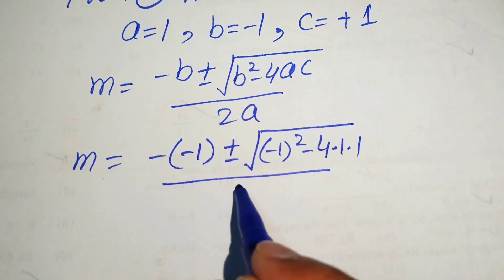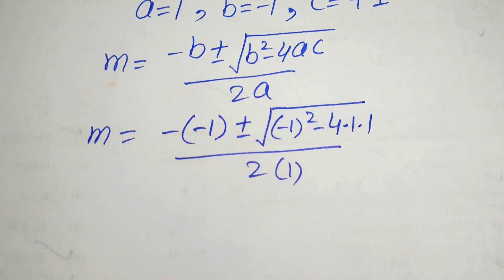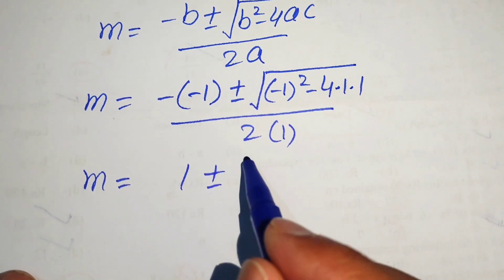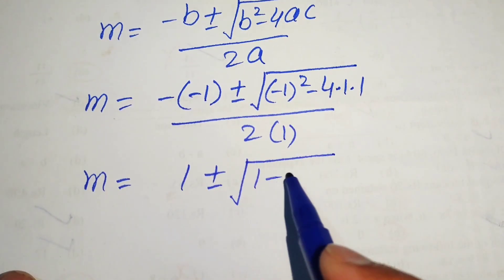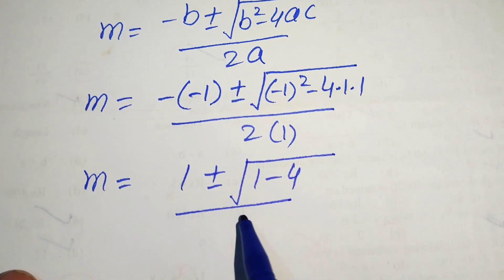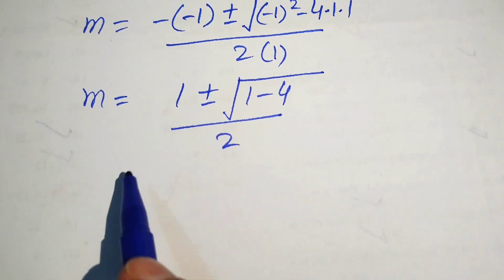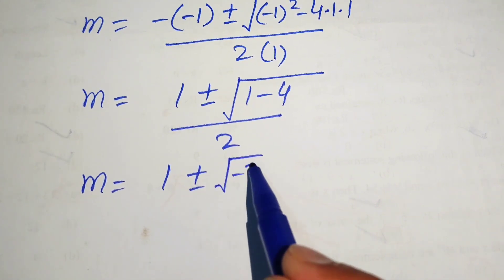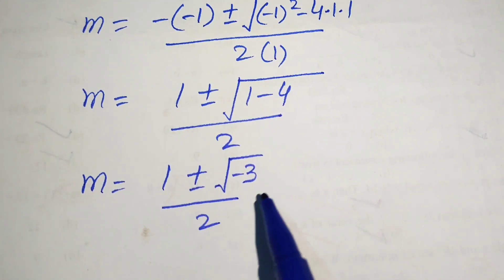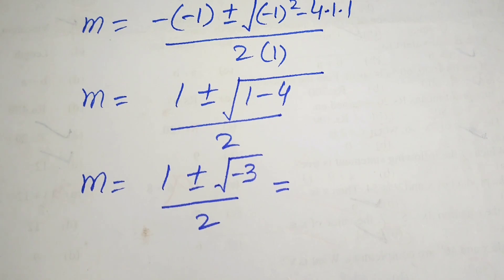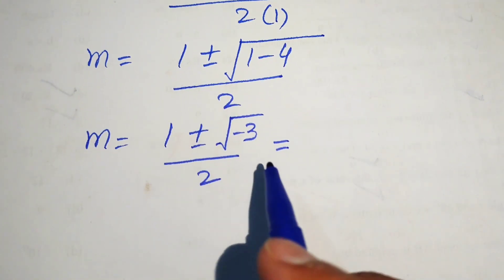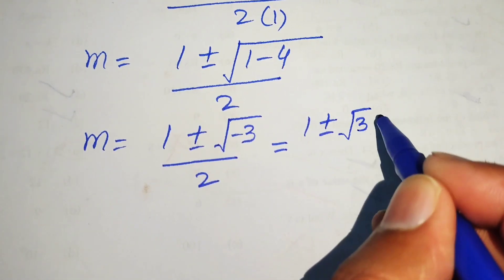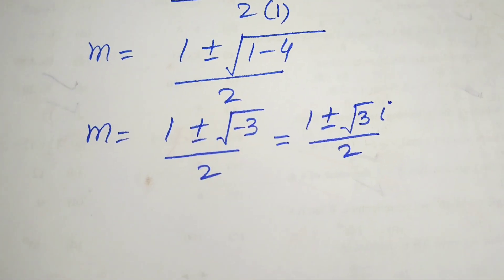Substituting the values, with a equals 1, b equals minus 1, c equals 1, we get m equals 1 plus or minus square root of 1 minus 4, divided by 2. Simplifying, this is 1 plus or minus square root of minus 3, divided by 2. Converting the negative under the square root using iota, we get m equals 1 plus or minus square root of 3 times iota, divided by 2.